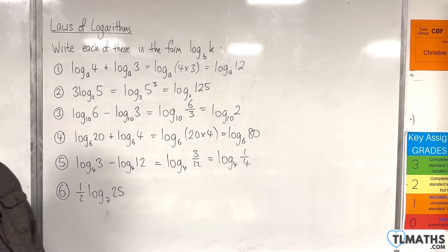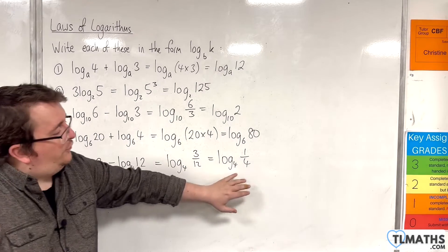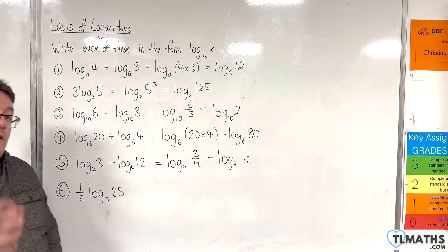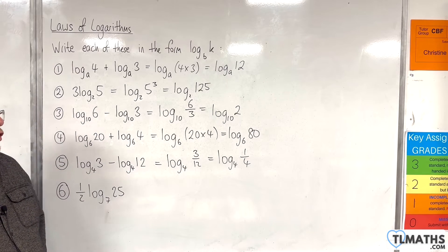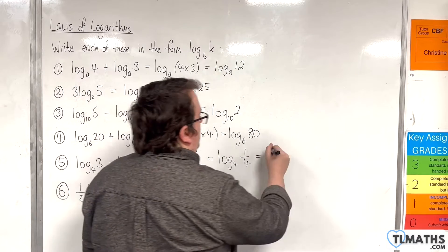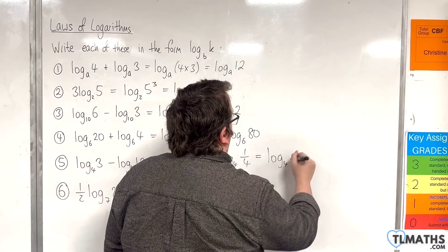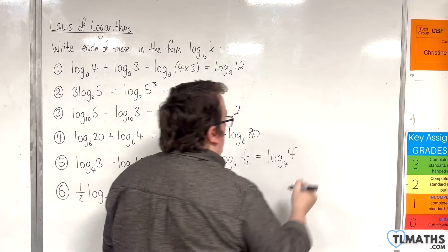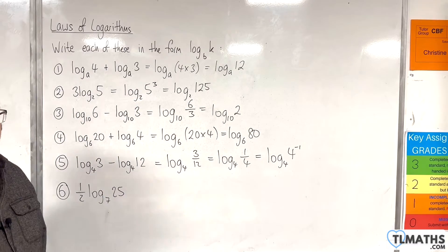Now we're going to stick with this one for a moment because it's useful to see how much further we can manipulate that. Log base 4 of 1 quarter is the same as log base 4 of 4 to the minus 1. 1 quarter is 4 to the minus 1.